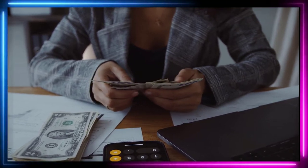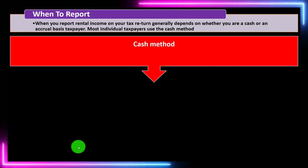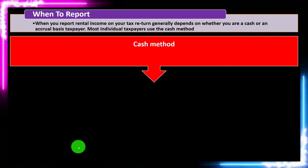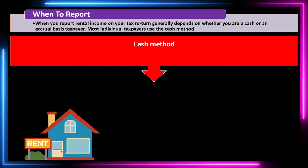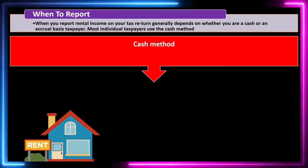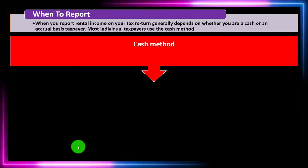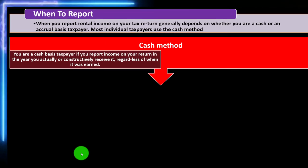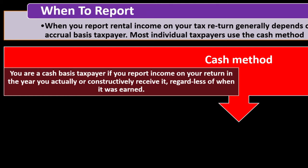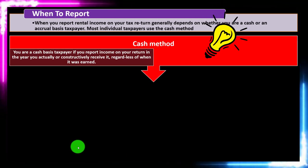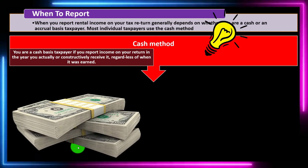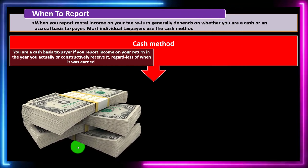Some standard types of businesses are required to use accrual — for example, those using inventory. Rental property doesn't have an inventory component, so that's less of a problem. Under the cash method, you are a cash basis taxpayer if you report income in the year you actually or constructively receive it, regardless of when it was earned.